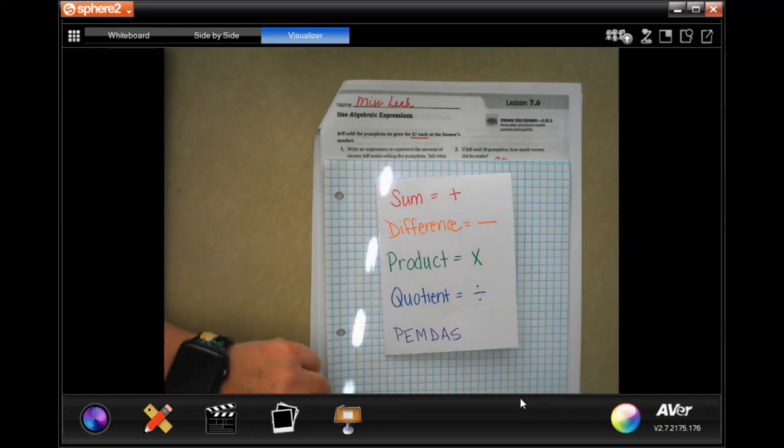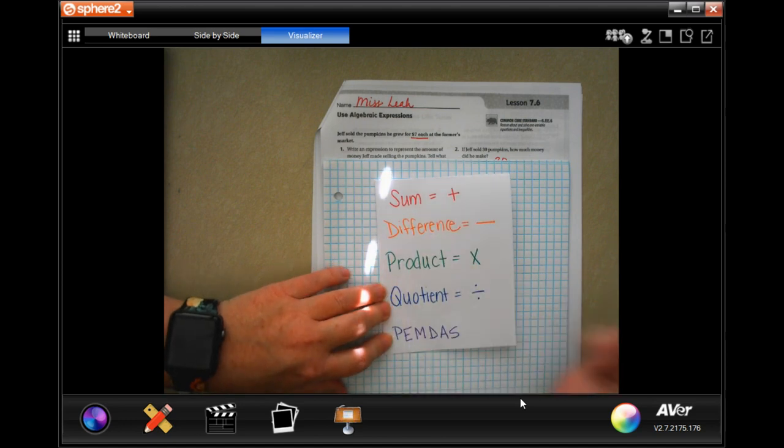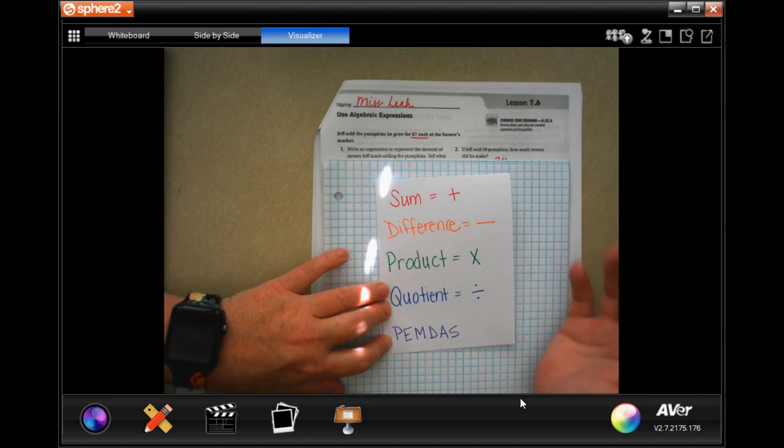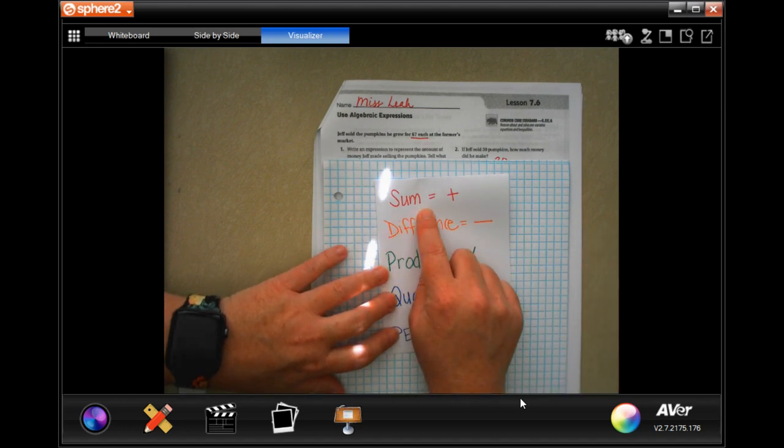Hey y'all, welcome to sixth grade chapter seven, lesson six. We're going to go ahead and get started, but before we do, I want you guys to pause, do whatever you need to do, write this down, memorize it, take a picture, add it in there, just make sure that you've got whatever it is that you need to remember.